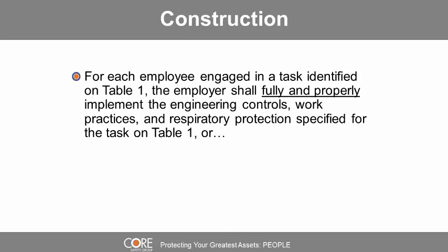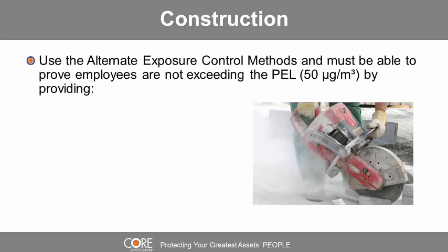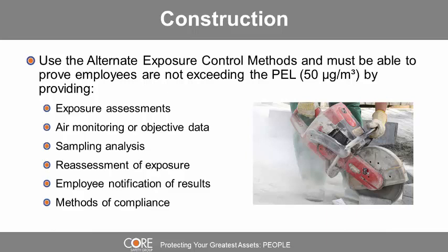In the construction industry, for each employee engaged in a task identified in OSHA's Table 1, the employer shall fully and properly implement the engineering controls, work practices, and respiratory protection specified for the task on Table 1. Alternatively, employers may use alternate exposure control methods and must prove employees are not exceeding the PEL of 50 micrograms per cubic meter.